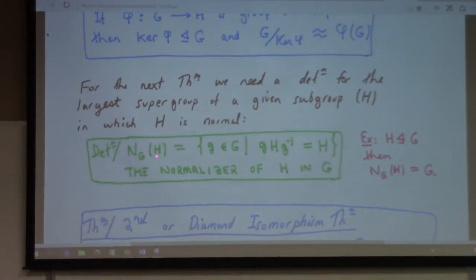So, this is the normalizer of H in G. It's defined to be the set of elements in the group for which the conjugate of the subgroup by G is the subgroup again. Of course, you could rewrite this condition as the left coset of H is equal to the right coset of H by G. And, so, if you want, like, an intuition for what this is, this normalizer of H in G, it's going to be the largest group in G.